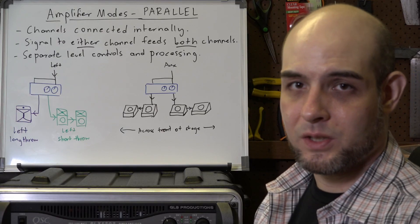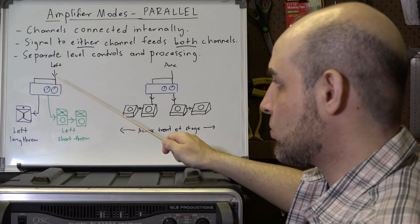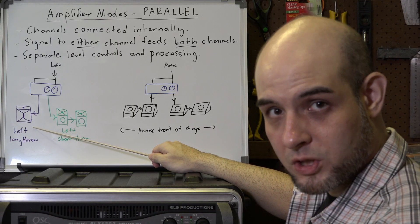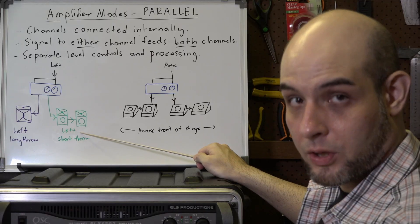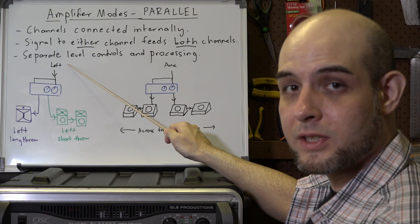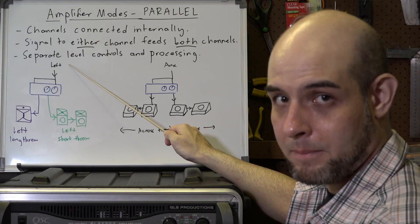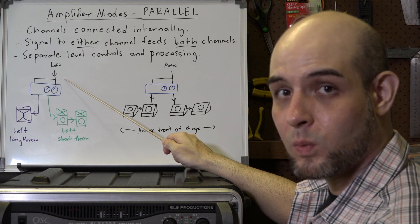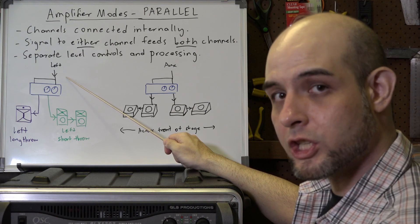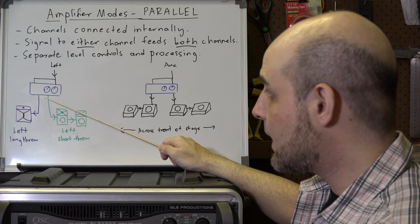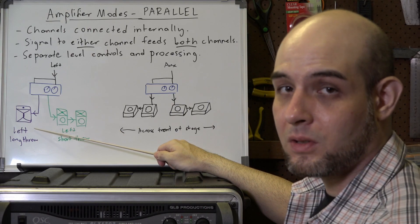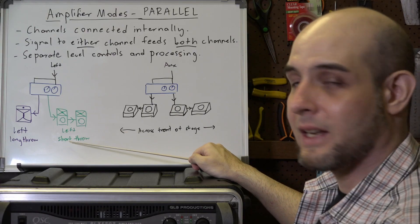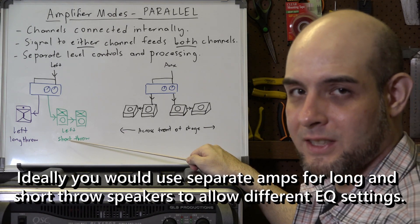The first is using parallel mode to run a large PA system with a combination of long throw and short throw speakers. You would send a full range signal to the amp, which is then split internally within the amplifier — no additional wiring needed. Channel one would feed your left long throw, for example, and channel two would feed your left short throw.